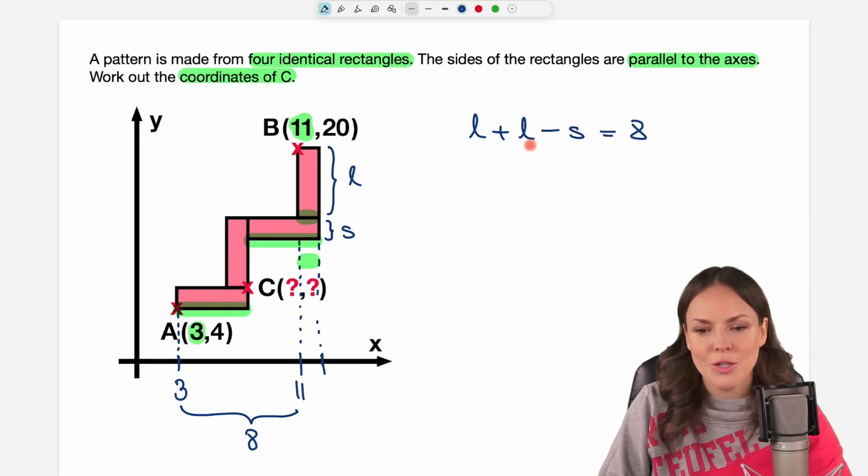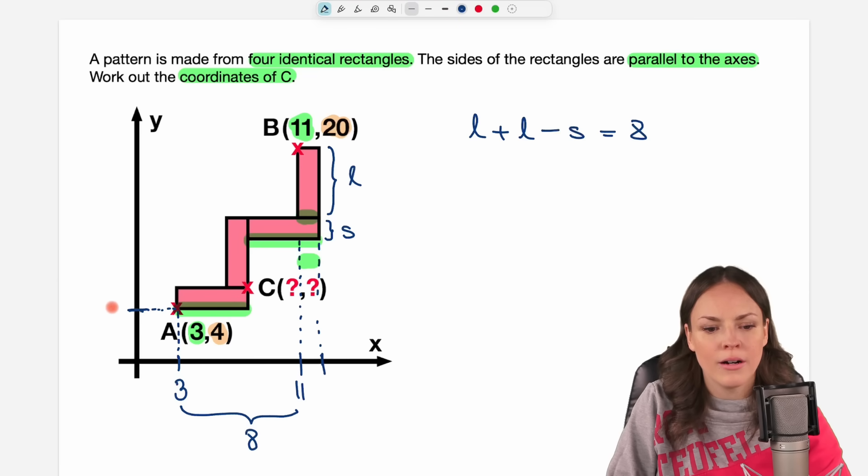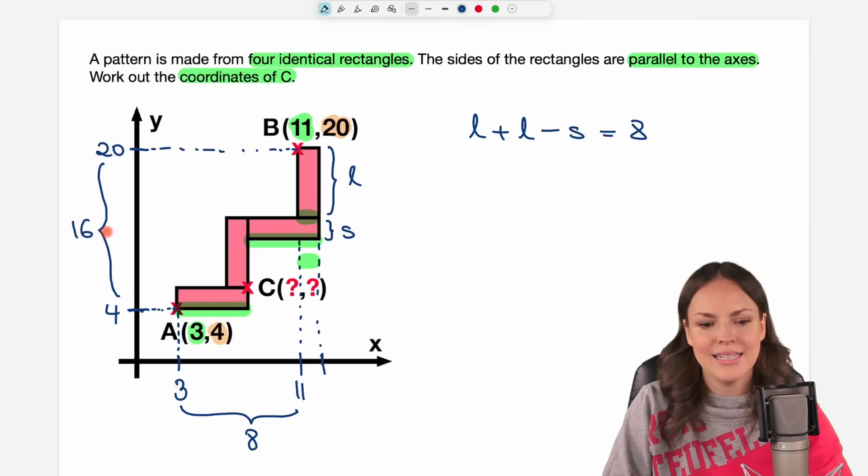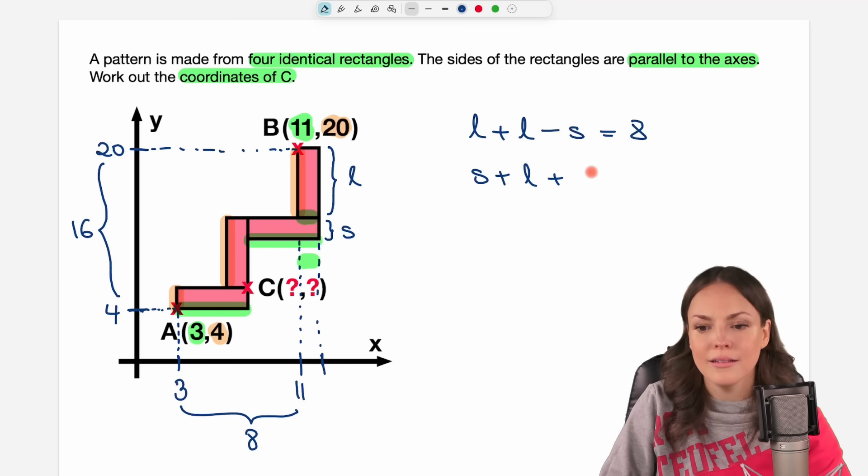We will need a second equation because we have two variables. But the good thing is, we also have our y coordinates. So we know that here at this point, we are at 4. At the point B up here, we are at 20. So in total, we walk 16 steps. This time, let's walk. We start from here. Take the short side. We take the long side. And then we take the long side again. And we get to the point where we want it to be, which is perfect. So we have S plus L plus L, which is 16 in total.